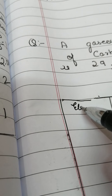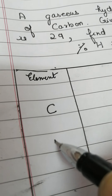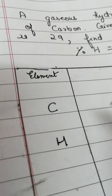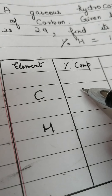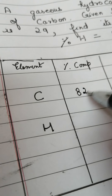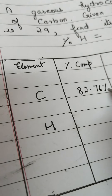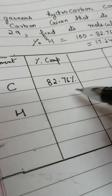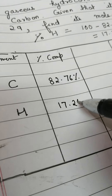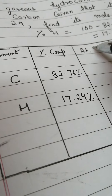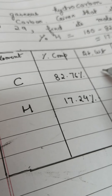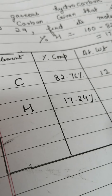The table is already set up. The first column contains the elements: carbon and hydrogen. The second column is percentage composition — carbon is 82.76% and hydrogen is 17.24%. The third column is atomic weight, which we already know: carbon is 12 and hydrogen is 1.